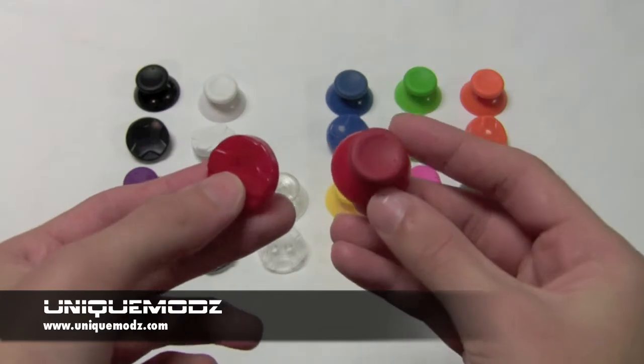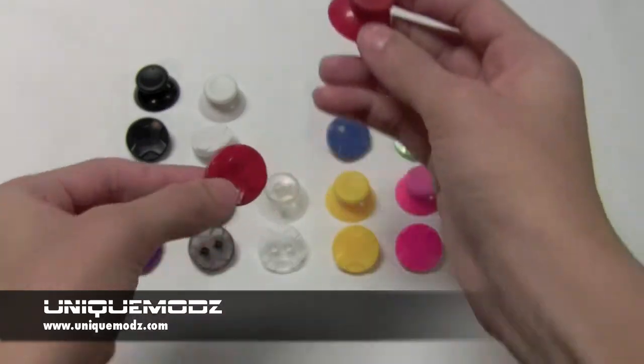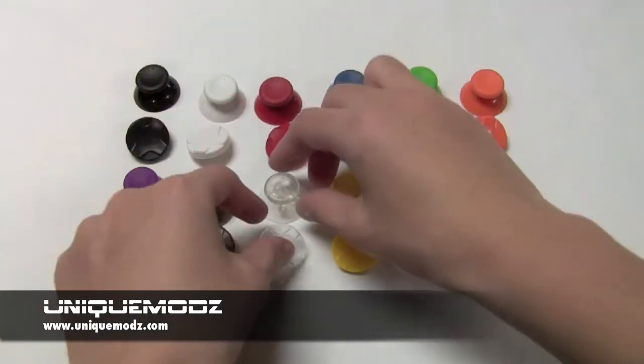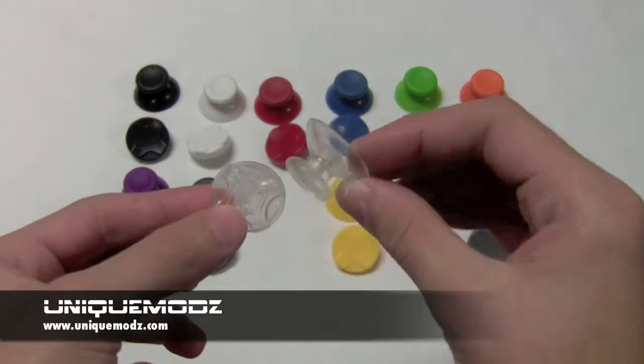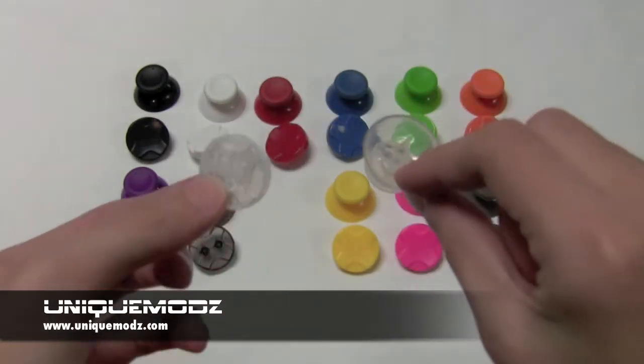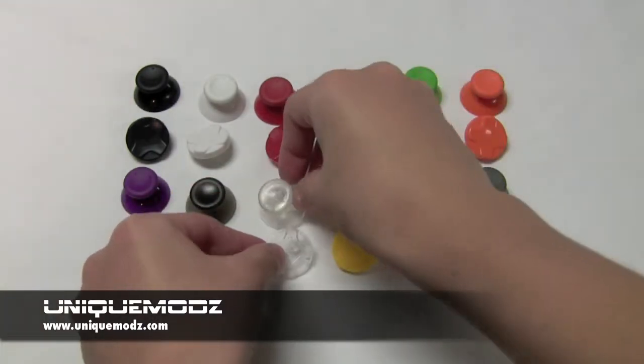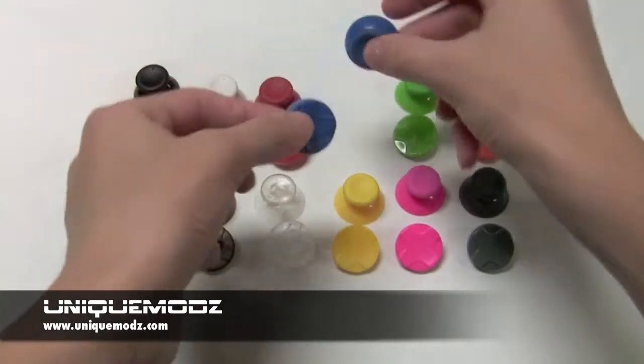These are our red thumbsticks and d-pad. Our clear thumbsticks and d-pad. These are really cool. They're 100% transparent. They have the same feel as the original thumbsticks and d-pad with the rubber top and the little grooves.